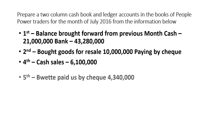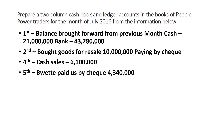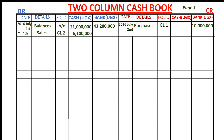On 5th, Buwete paid us by check $4,340,000. Buwete was our debtor — we had supplied goods to him on credit and now he's paying us by check. The two items affected are debtor Buwete's account and the bank. Since Buwete paid us, the amount of money in the bank increased, so we debit the cash book by debiting the bank column with $4,340,000.